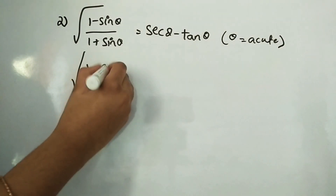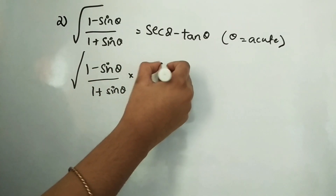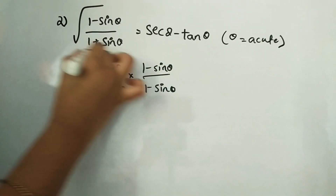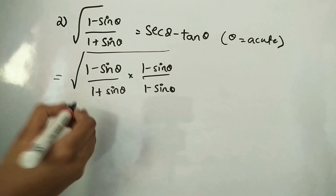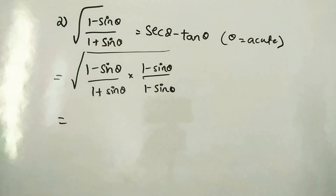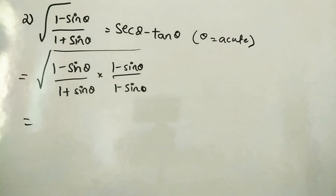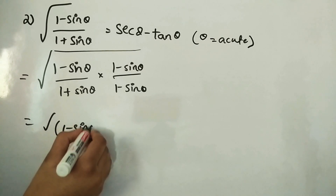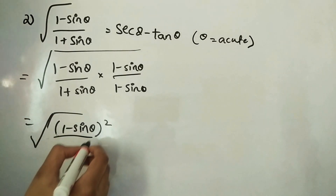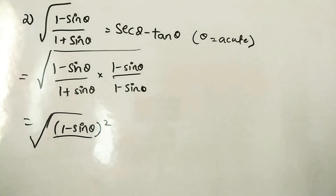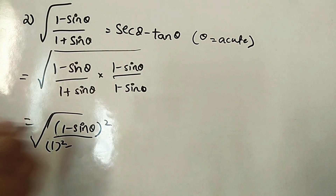So we get √((1 − sin θ)(1 − sin θ)) divided by √((1 + sin θ)(1 − sin θ)), which is √(1 − sin θ)² divided by √(1 − sin²θ). Using (a + b)(a − b) = a² − b², the denominator becomes √(1 − sin²θ).